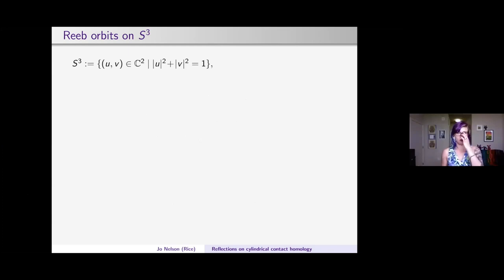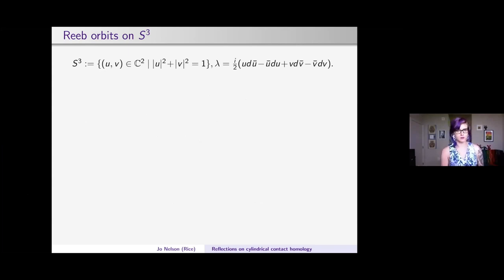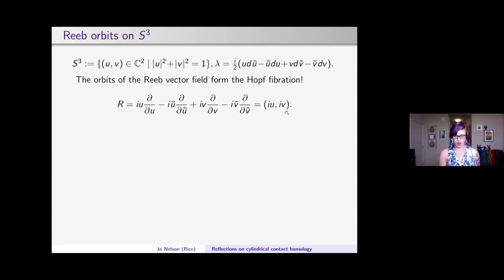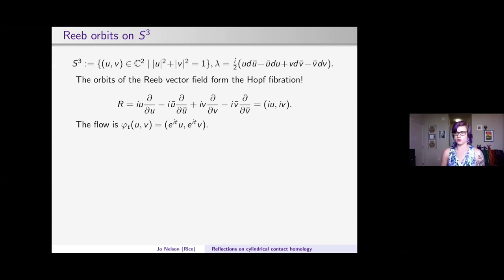As an example of a contact manifold with hyperbolic orbits: the three-sphere described as |u|² + |v|² = 1, with the standard contact form coming from the primitive of the Fubini-Study form on C² restricted to S³. The orbits of the Reeb vector field form the Hopf fibration. One computes the Reeb vector field, rewrites it in compact notation, and confirms the flow is (e^{itu}, e^{itv}). Over every point in S², you get exactly one Reeb orbit corresponding to a fiber of the Hopf fibration.